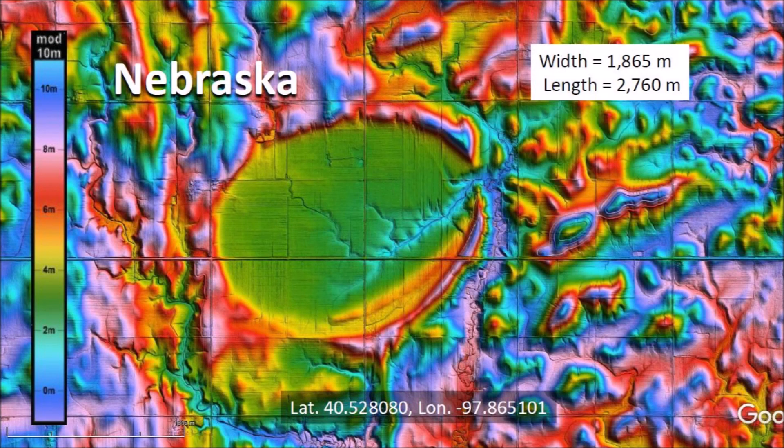LiDAR is a laser ranging technology that makes it possible to visualize slight changes in elevation. This LiDAR image shows a Nebraska rainwater basin with its typical raised rims and elliptical geometry. The southern end appears to have a double rim, but this is due to the degradation of the terrain by water erosion. Nevertheless, an ellipse can be fitted to follow the margin of the basin very closely. This is very remarkable for a geological feature that has a length of 2,760 meters, or about 1.7 miles.